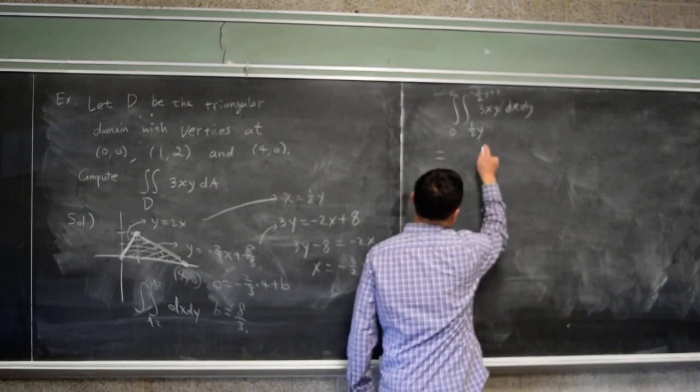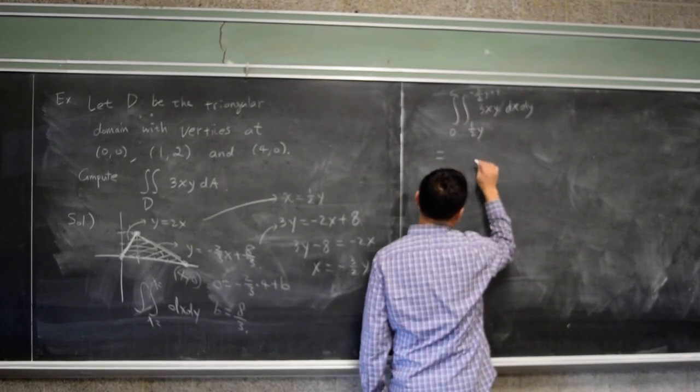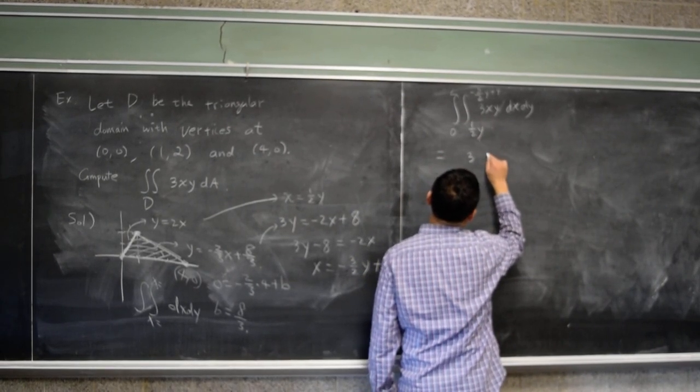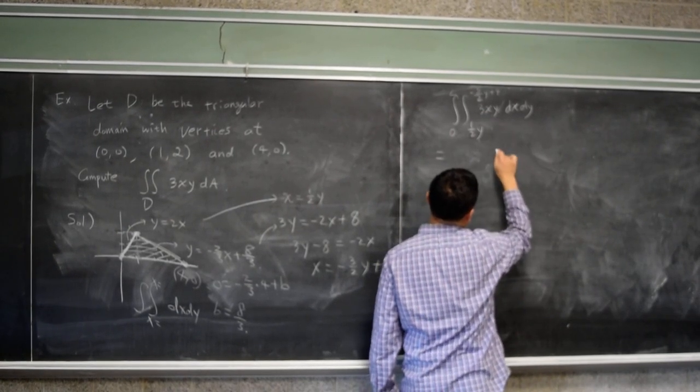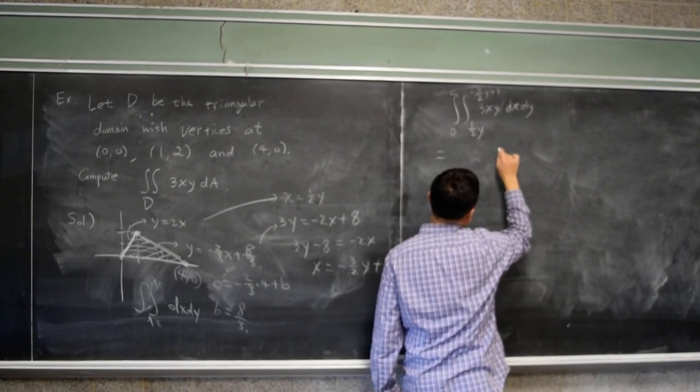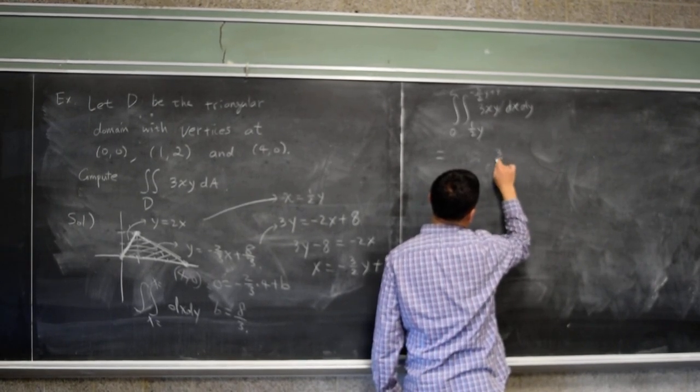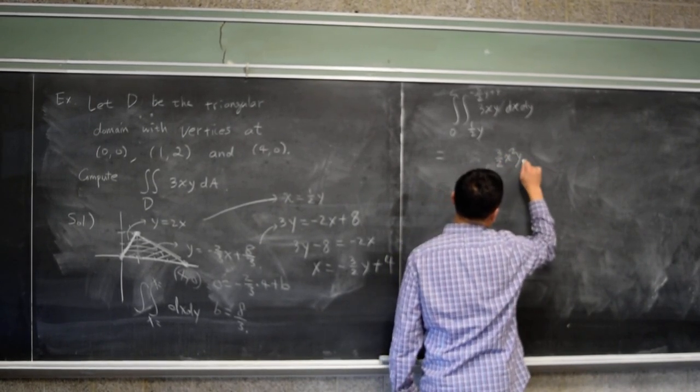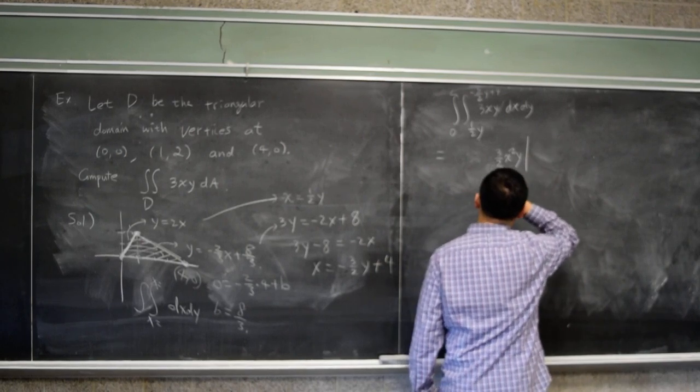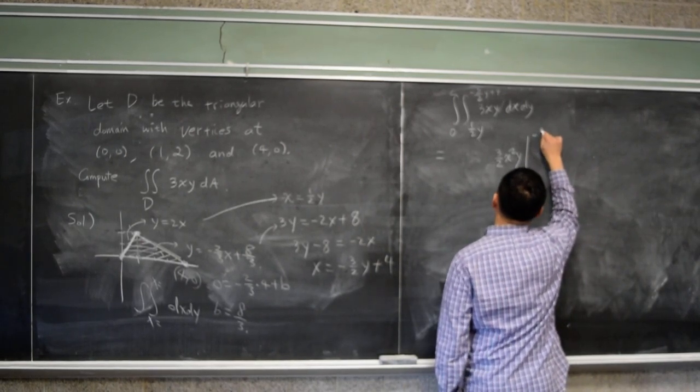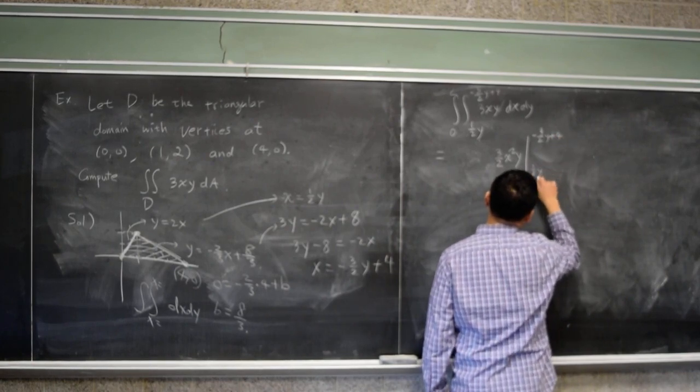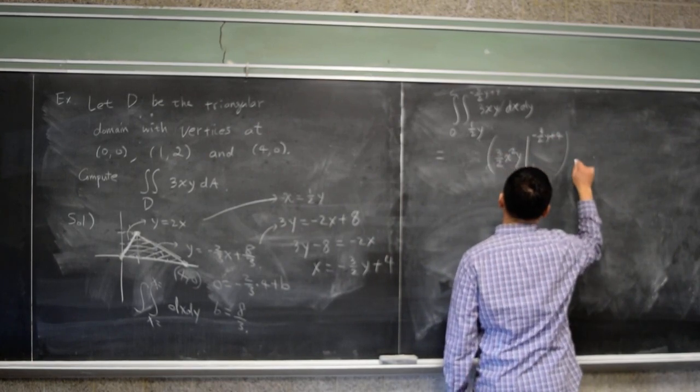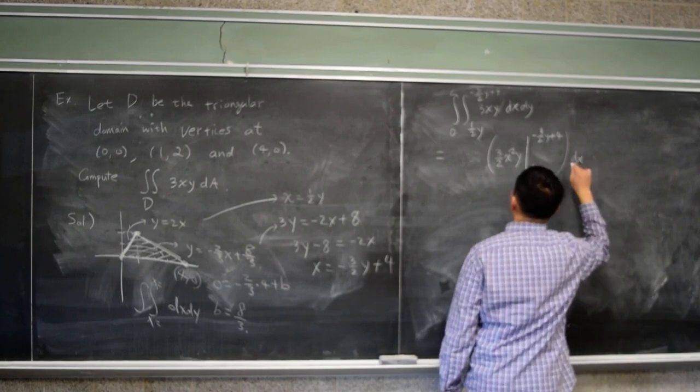Alright, so let's do the integral. Three can come out, so it's 3. Let's just integrate - integrating x gives you one half x squared, so it's 3/2 x squared y. And we're plugging in negative 3/2 y plus 4 and one half y, then dx dy.